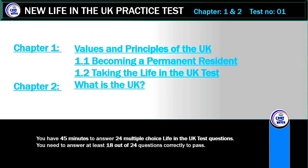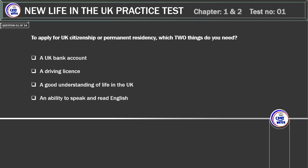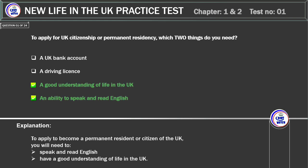Chapter 2: What is the UK? To apply for UK citizenship or permanent residency, which two things do you need? A UK bank account. A driving license. A good understanding of life in the UK. An ability to speak and read English. Correct answer: an ability to speak and read English and a good understanding of life in the UK.